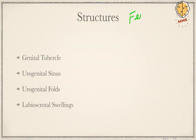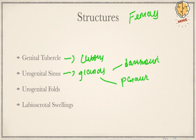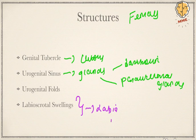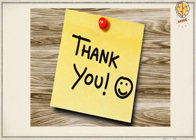In females, the urogenital sinus gives rise to the Bartholin glands and para-urethral glands. The labioscrotal swellings give rise to the labia majora, and the urogenital folds do not fuse in females, giving rise to the labia minora. That concludes genital embryology and today's class. Thank you so much.